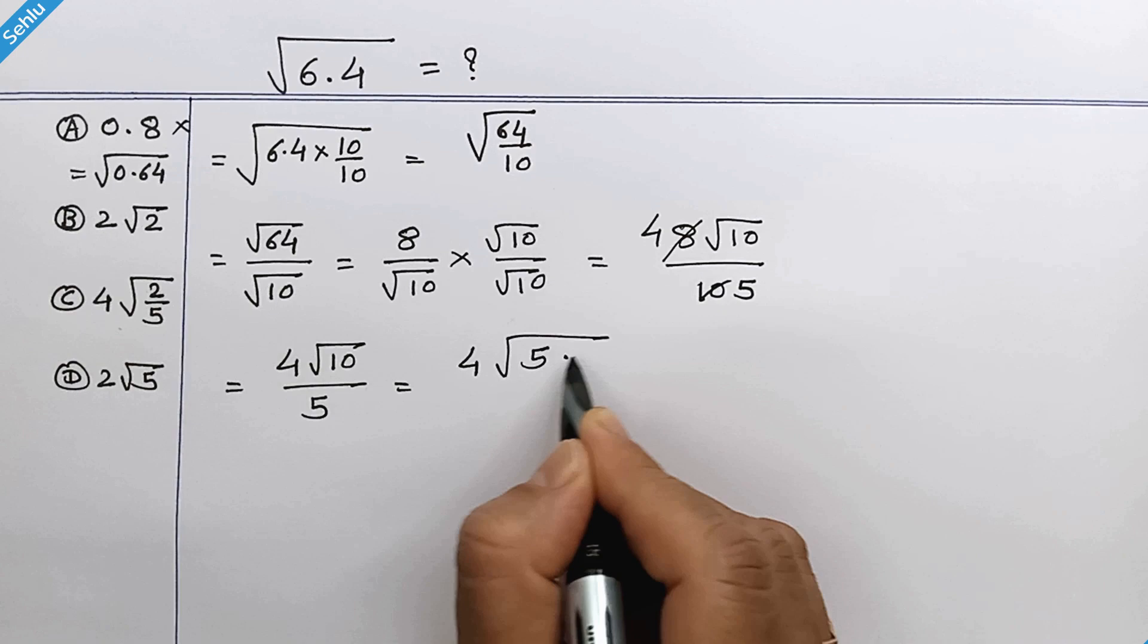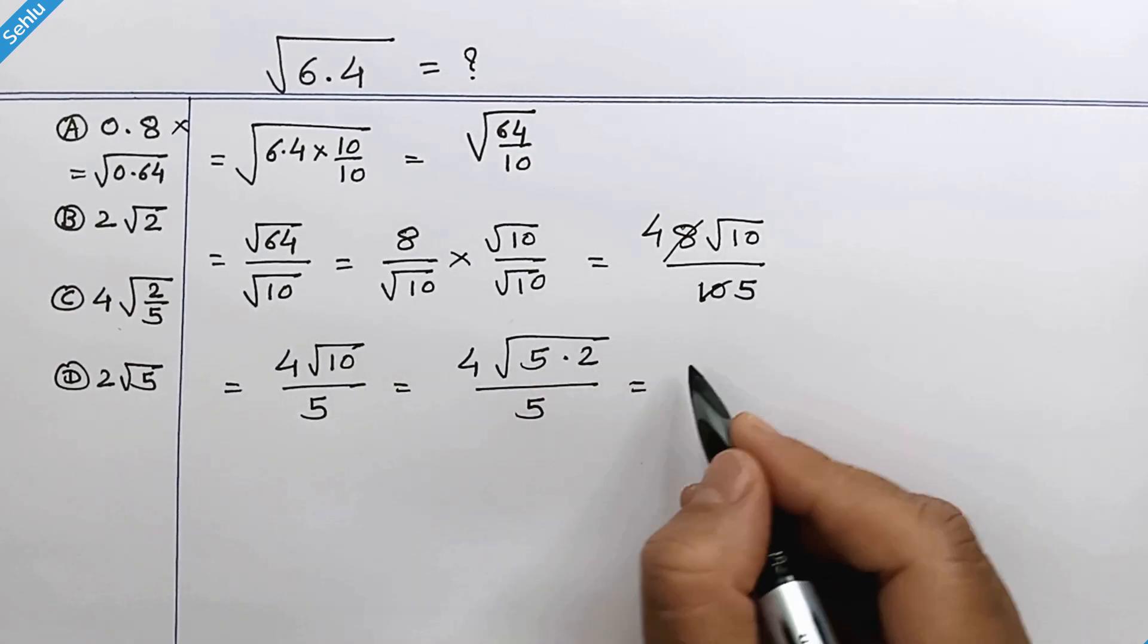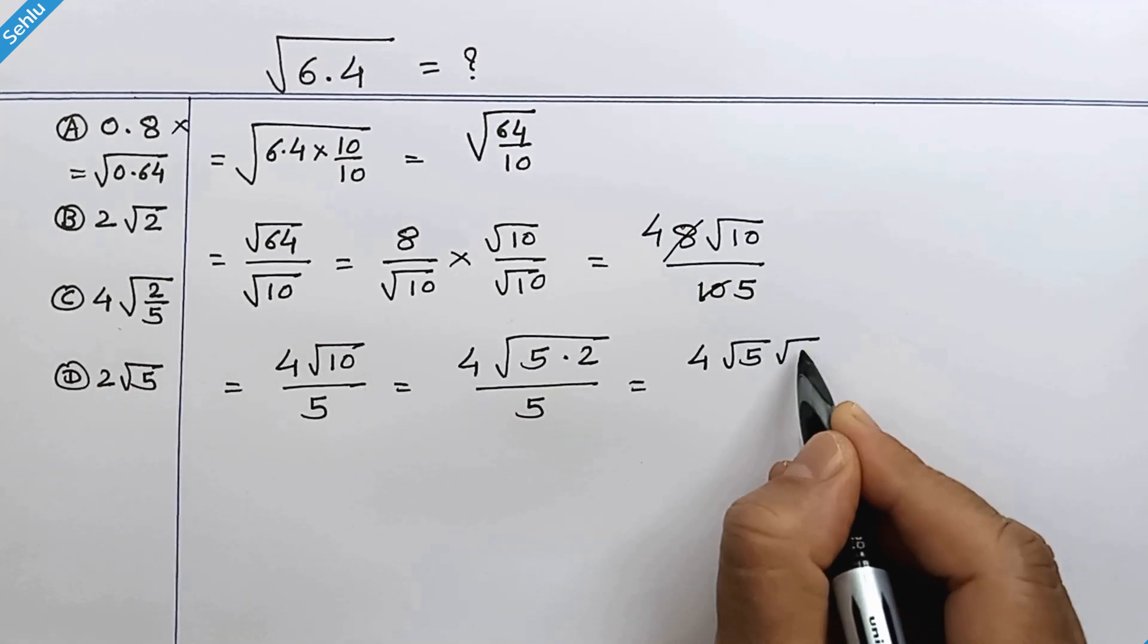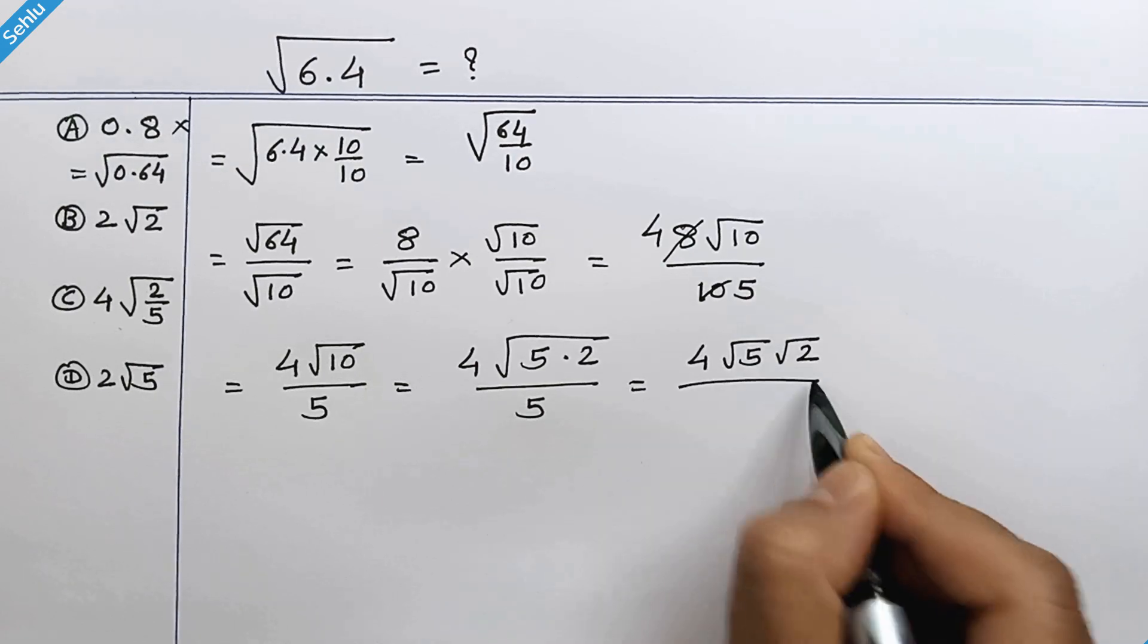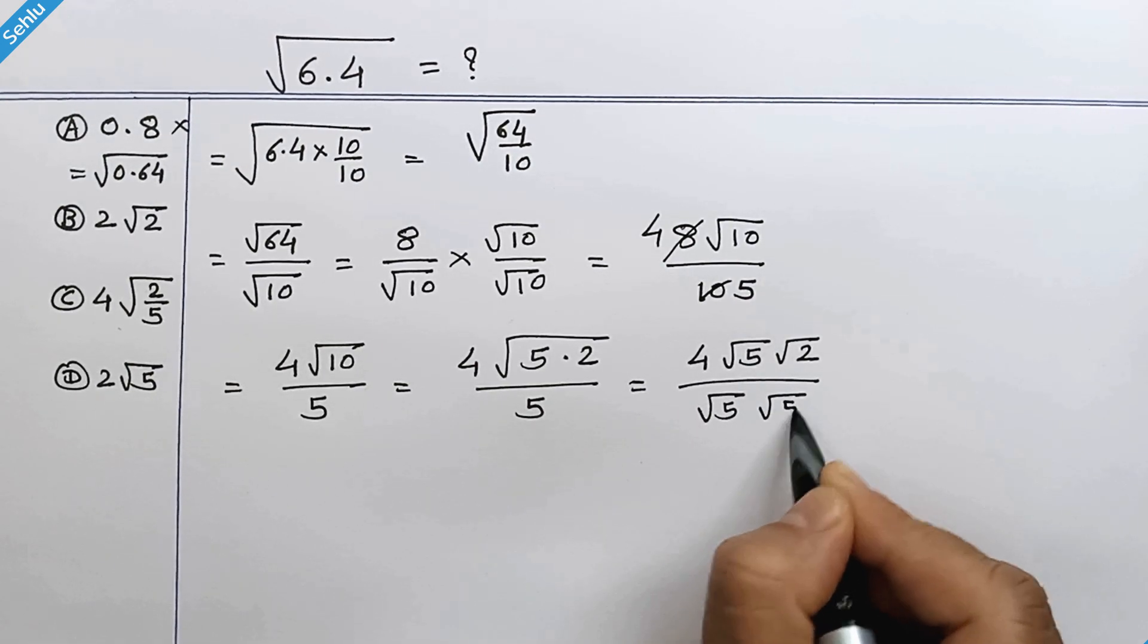10 is 5 times 2, so we can write square root 10 as square root 5 times square root 2. The denominator 5 can be written as square root 5 times square root 5, right?